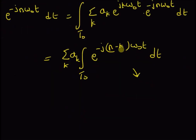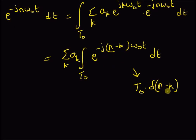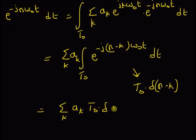This integral must be equal to T₀ multiplied by δ(n−k), because this integral can be seen as a transform of one, which is basically an impulse function. So this equals summation over k of aₖ multiplied by T₀ multiplied by δ(n−k), which is clearly equal to T₀ · aₙ, because of the shifting property of the impulse function.